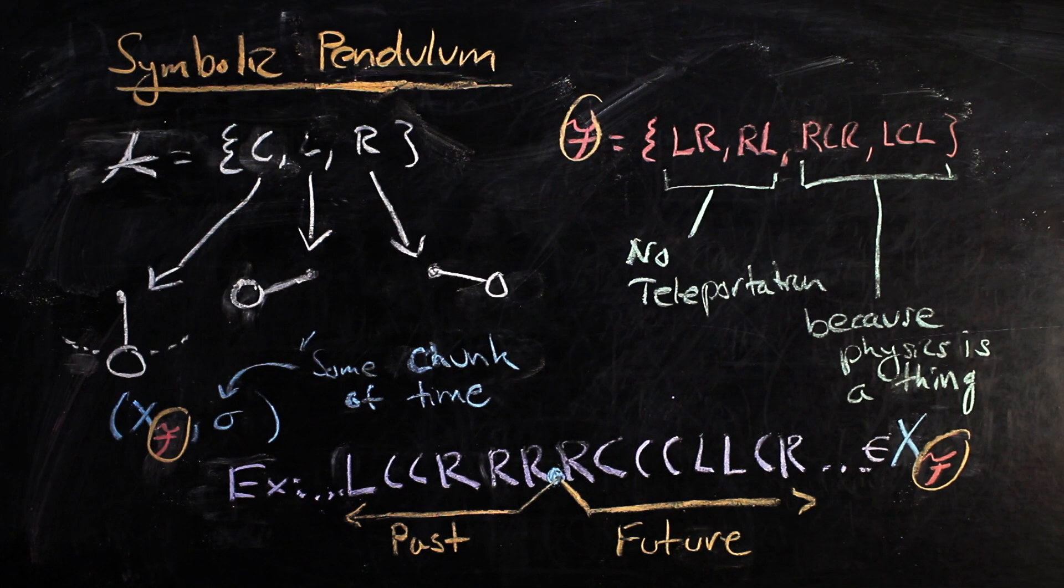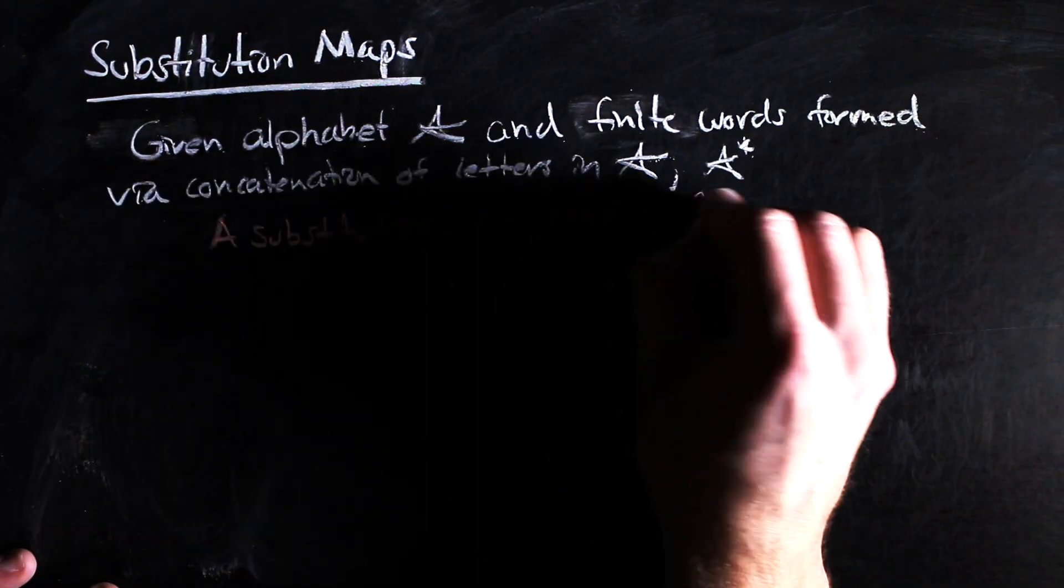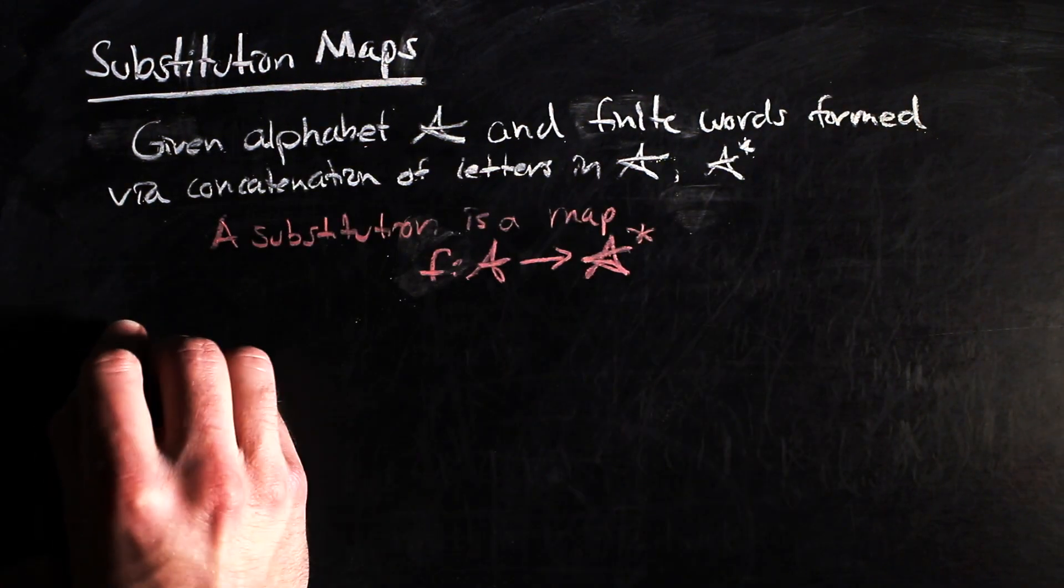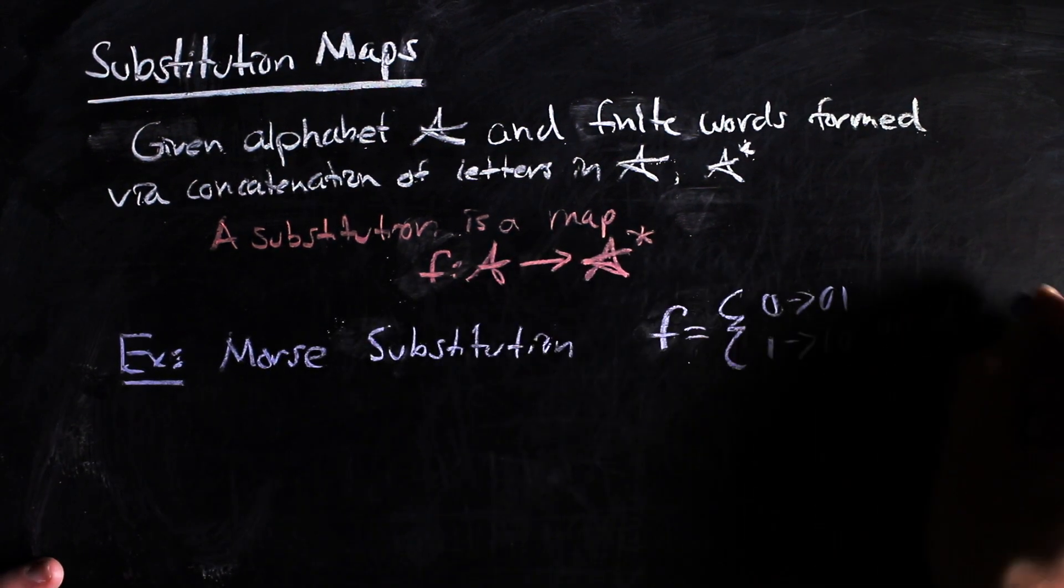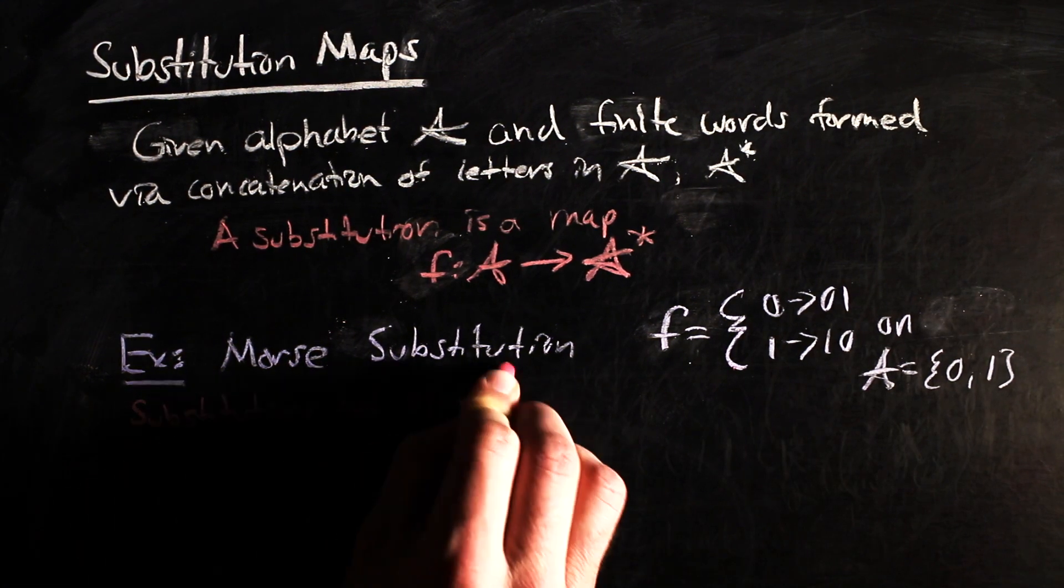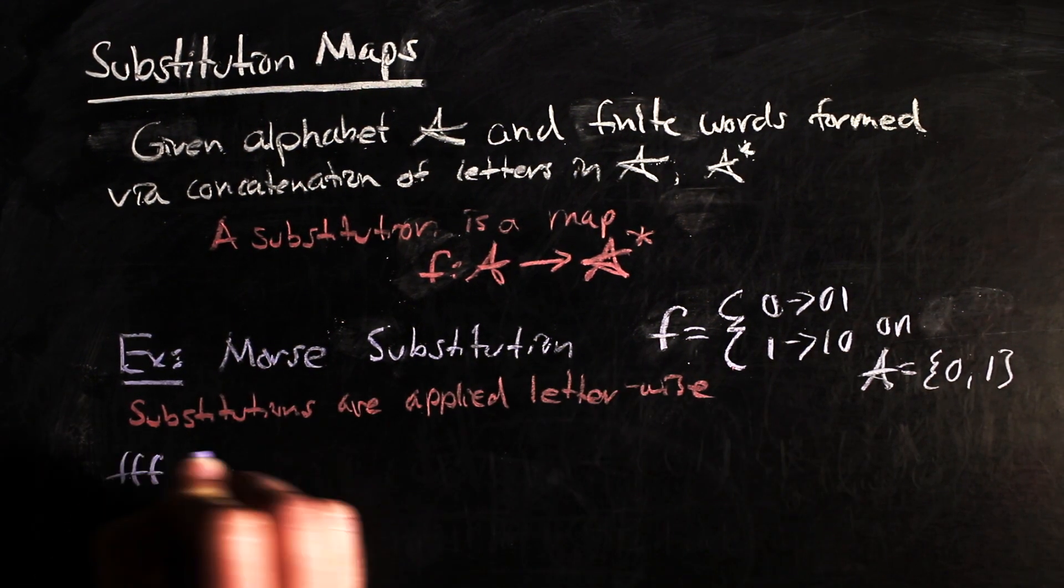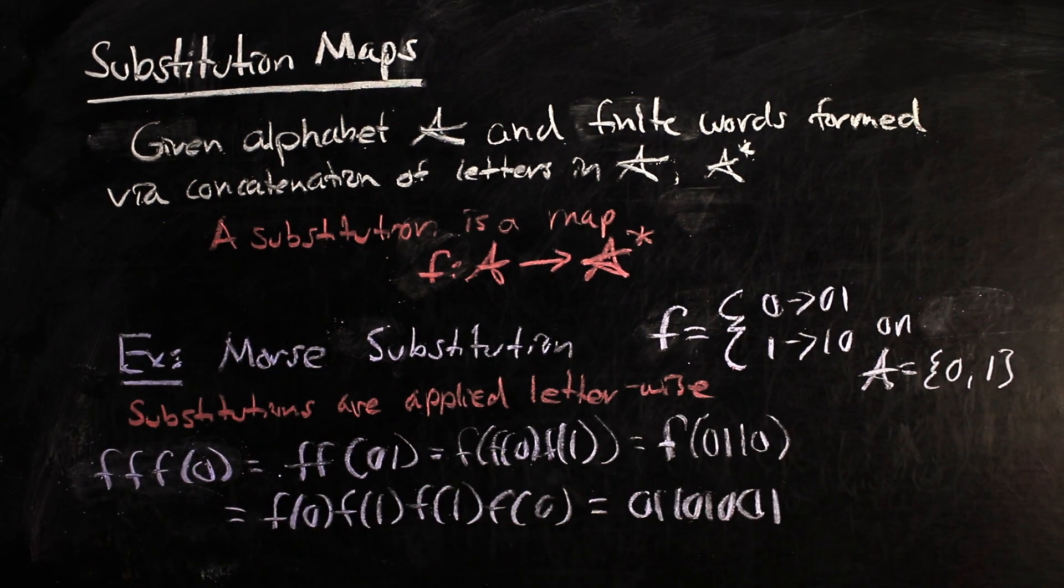One such class of symbolic systems that are prone to this behavior are the ones generated by using substitution maps. A substitution map in the symbolic sense is a mapping from the alphabet to the finite words over that alphabet. One famous example is the Morse substitution on the alphabet 0,1. Substitution maps naturally extend to finite words by applying the map letterwise. This allows us to get an infinite word by applying this type of mapping repeatedly.